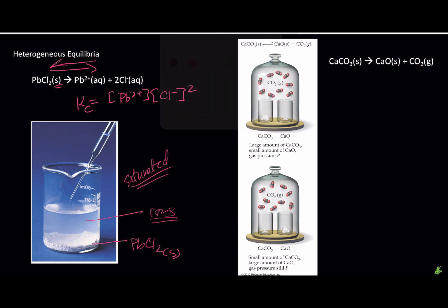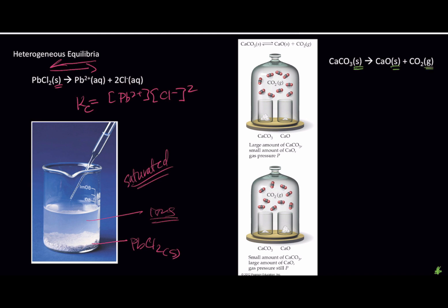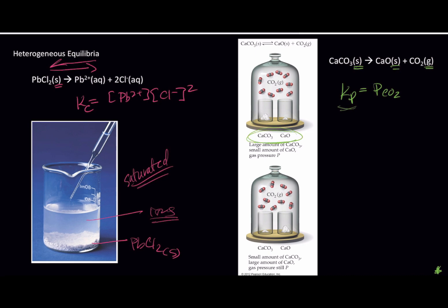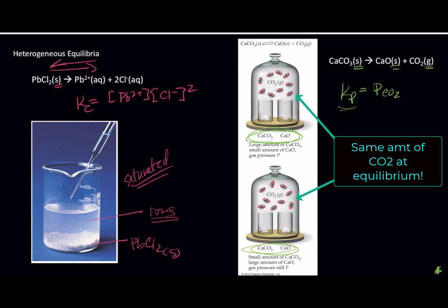Next example: if we have solids and gases together, we might talk about this in terms of Kp. And Kp would just be P(CO2) — that's it. That makes measuring K for this process super easy because there's only one thing to keep track of. The same principle applies: if we want to talk about this as an equilibrium process, we must have all species present. Both solids must be present, and while it doesn't matter how much of each solid, there must be some. We end up with the same amount of CO2 regardless, because that's where the reaction comes to rest.